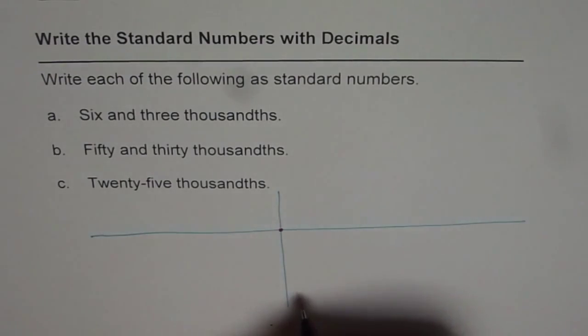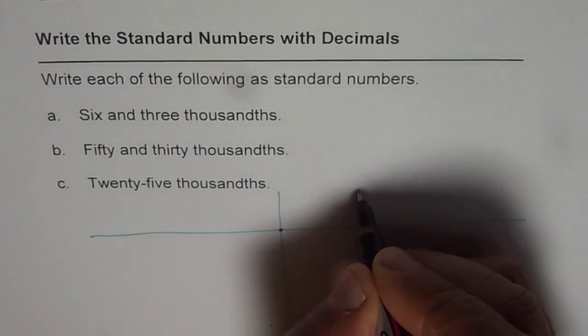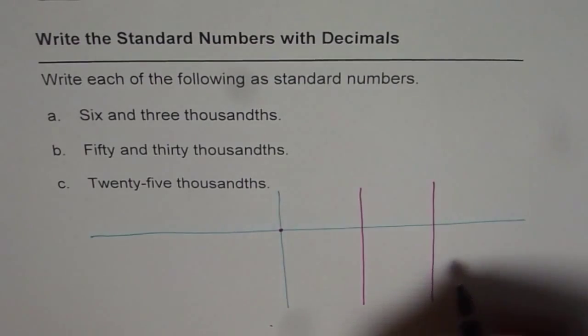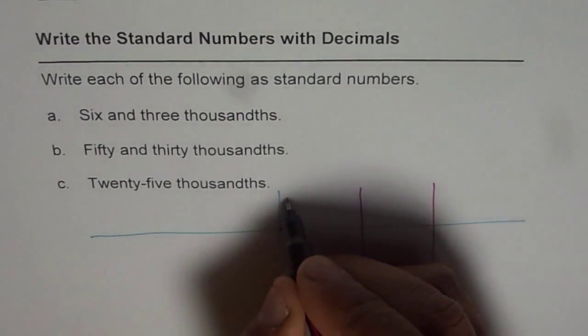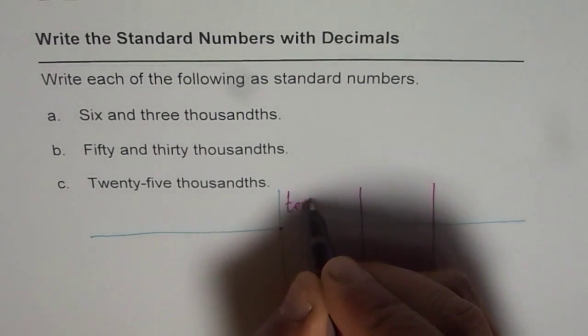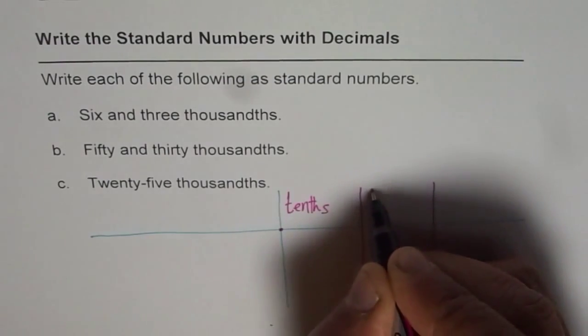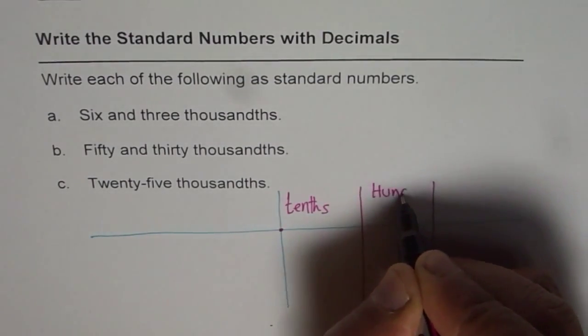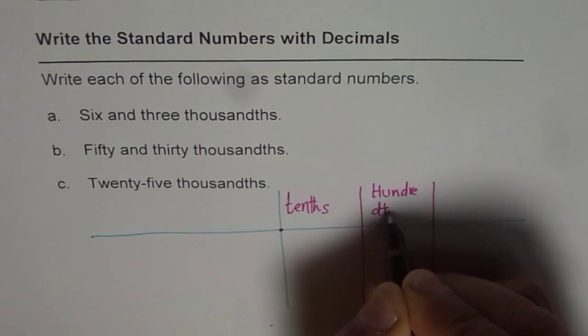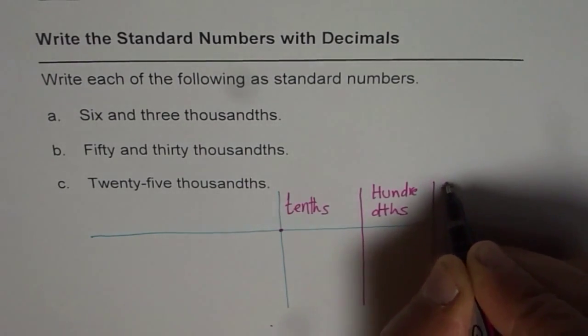To the right we have tenths. So we have tenths, hundredths, and thousandths. So this is tenths, hundredths, and thousandths.